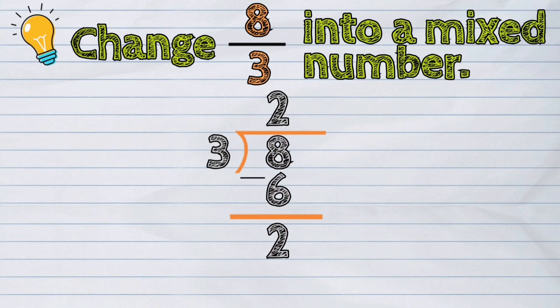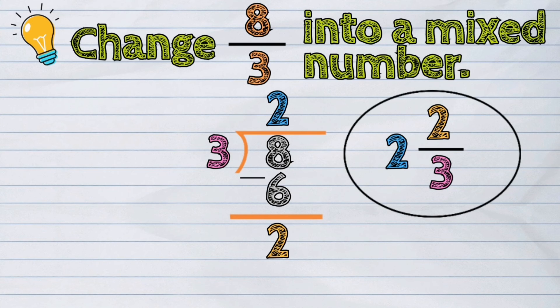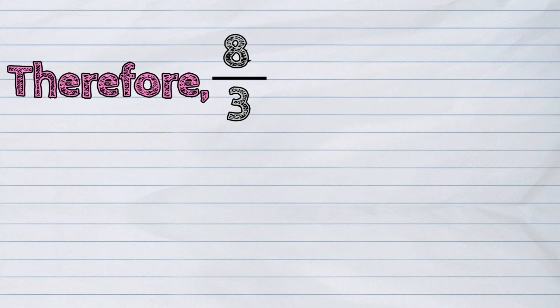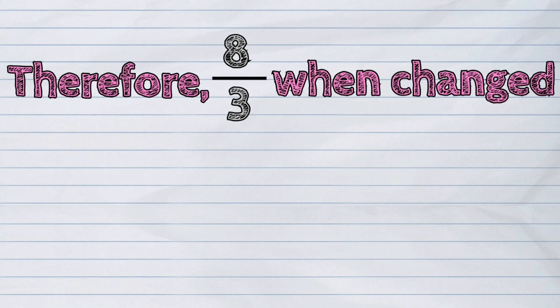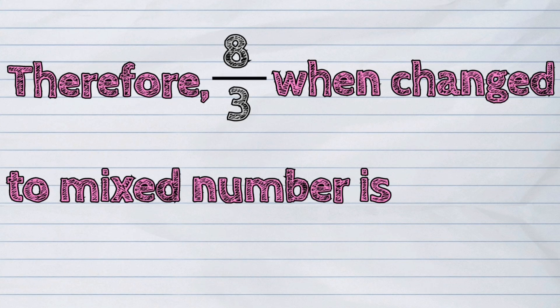So that means that our whole number is the 2 in the quotient line. And our numerator is the 2 in our remainder. And the denominator is the same, digit 3. Therefore, 8 thirds when changed to mixed number is 2 and 2 thirds.